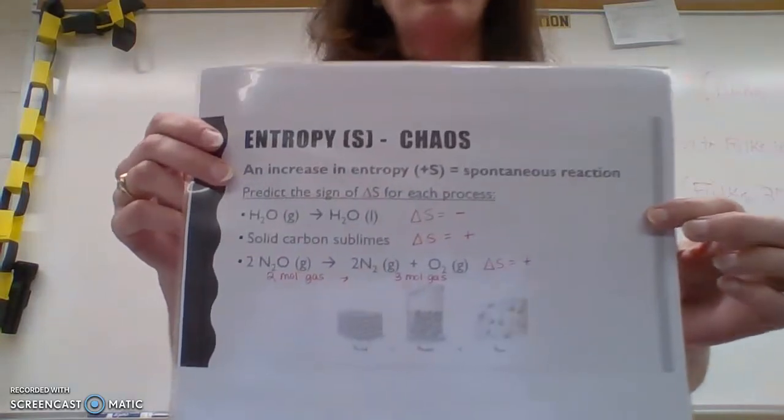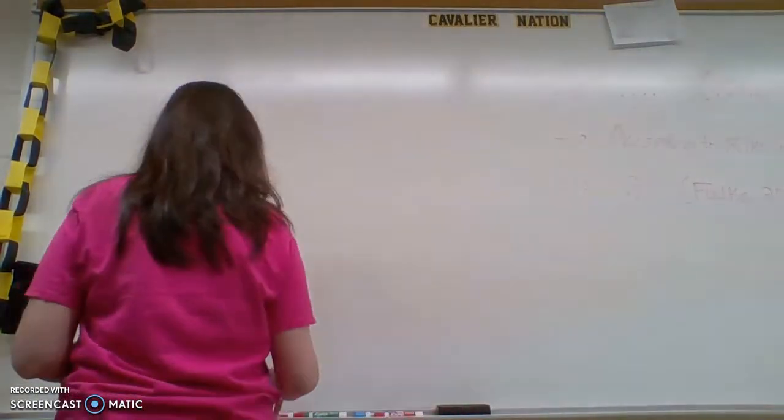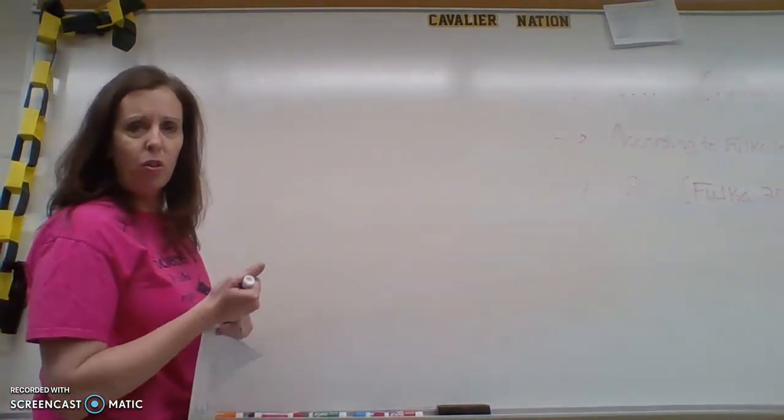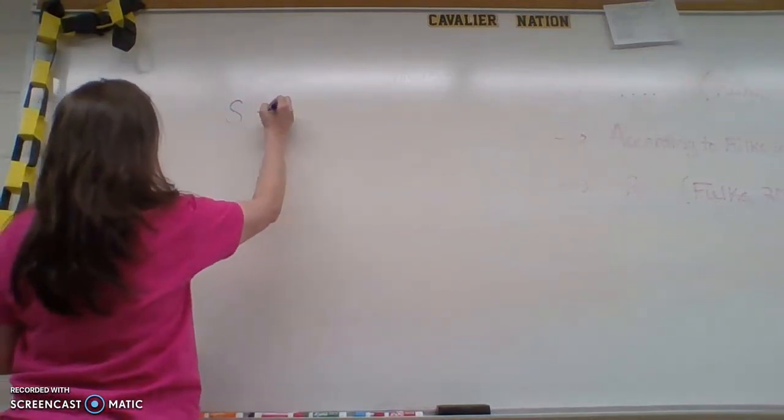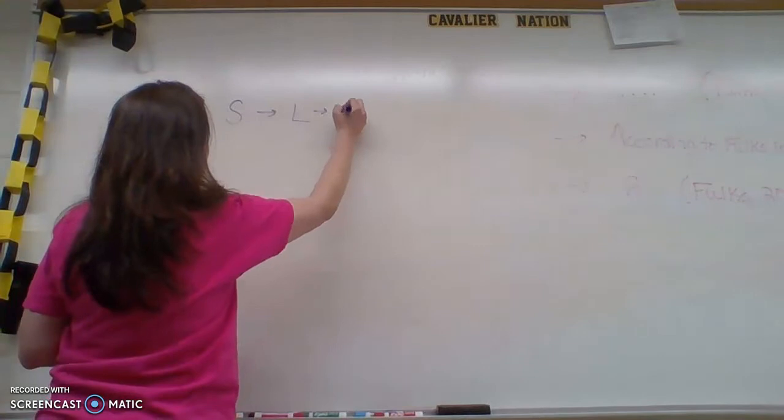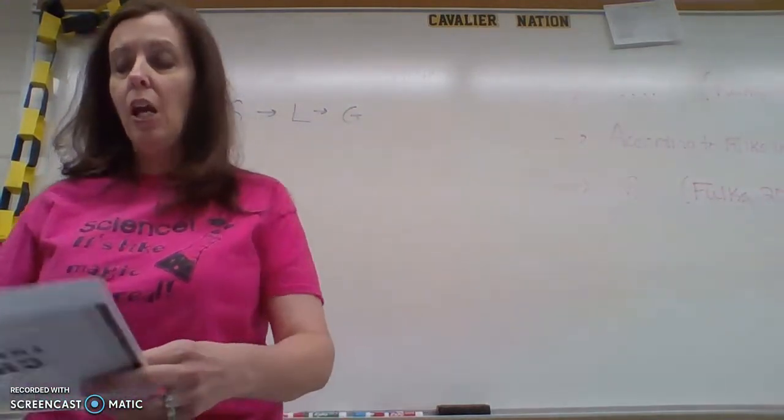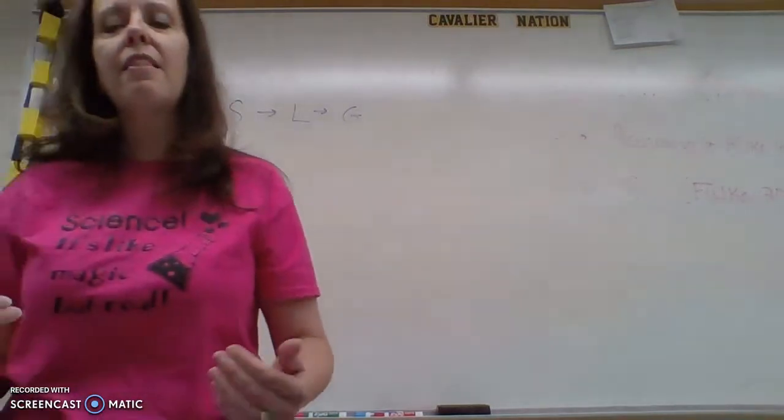So chapter 18 starts off talking about entropy, and as you know, these notes can be located on Schoology so you can follow along there. Entropy, for lack of better words, is chaos, and in chemistry we like for things to be chaotic. The more random and chaotic they are, there's more of a chance that things will react.